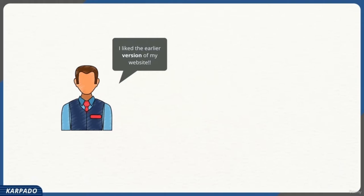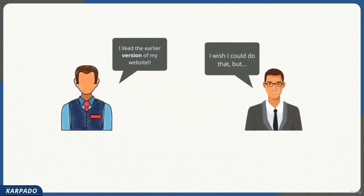Bob explained the situation to Sundar and asked him to undo all the new changes and bring the application back to what it was on 24th February. Sundar hesitantly accepted, but unfortunately it was not going to be an easy task. There was a lot of new code introduced after 24th February, scattered across multiple files, and it was really hard for Sundar to recollect each and every line of code to undo all those changes.